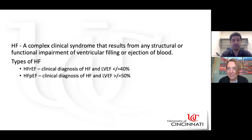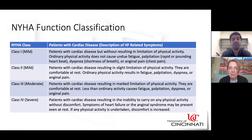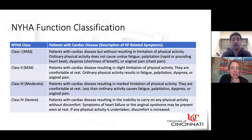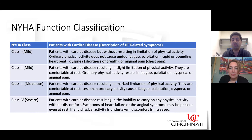For classification, the first system is the New York Heart Association functional classification, which goes from class one to class four. Class one: cardiac disease without limitation of physical activity. Class two (mild): slight limitation of physical activity. Class three (moderate): marked limitation of physical activity. Class four (severe): inability to carry on any physical activity without discomfort.